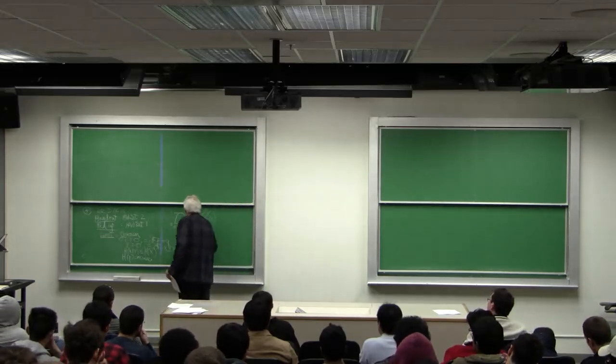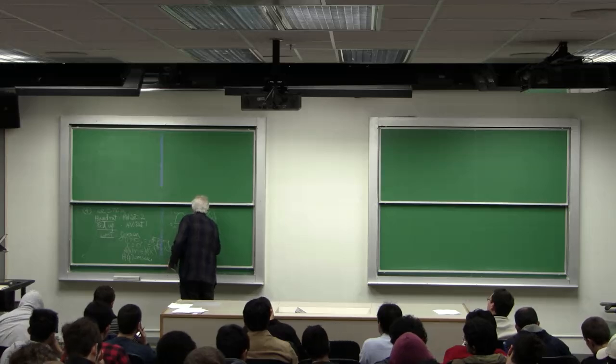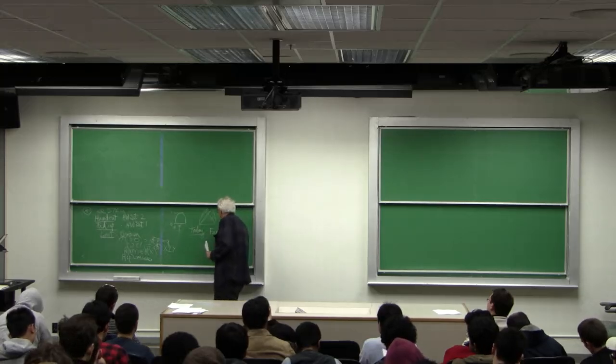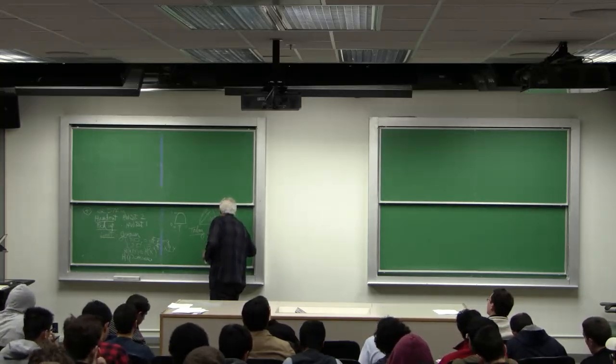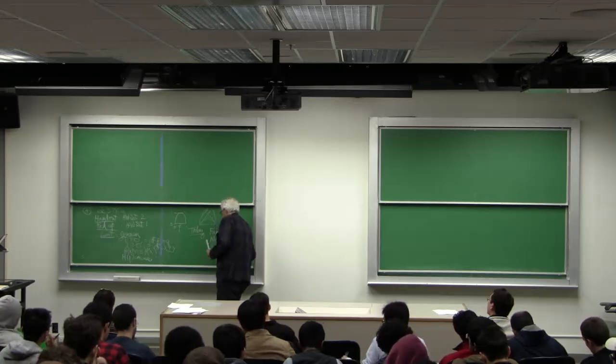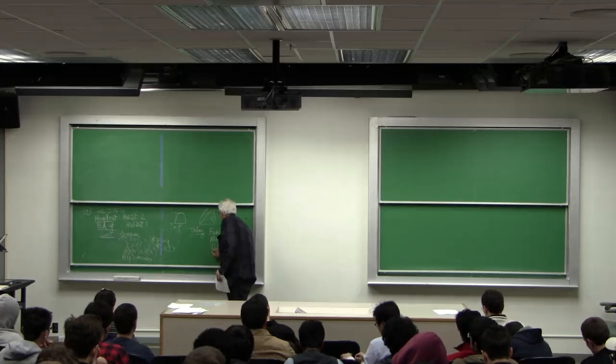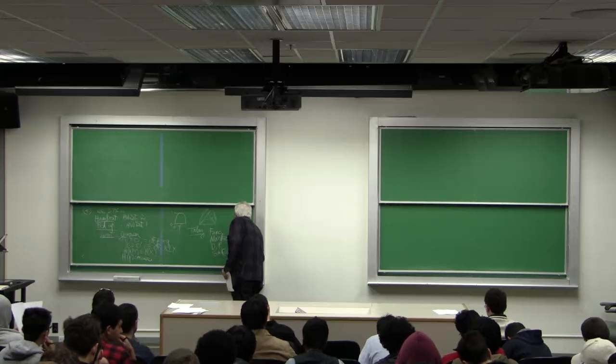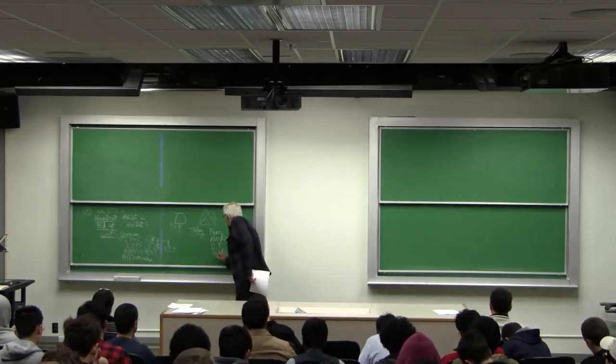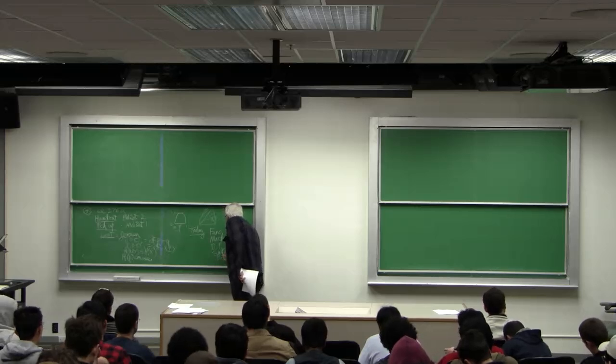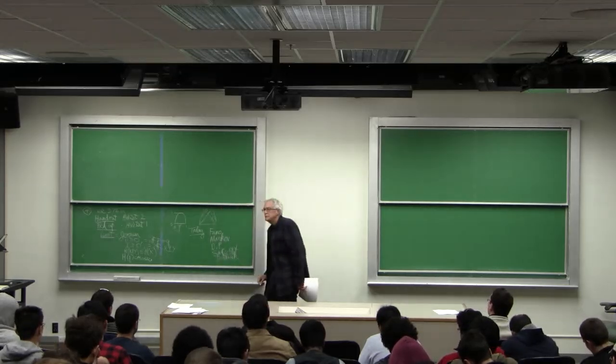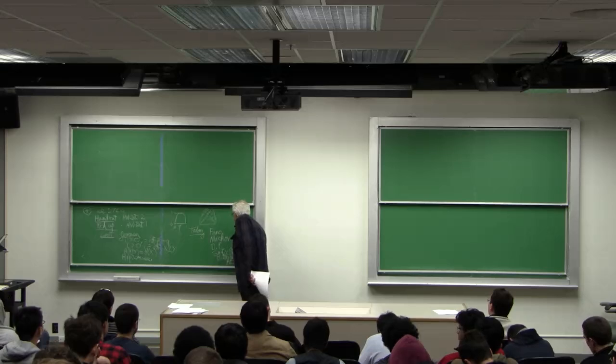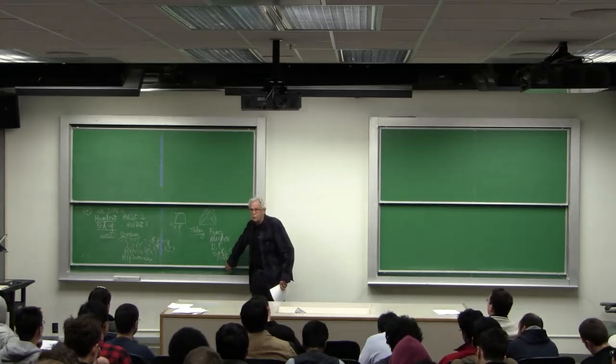Today I want to look at Fano's inequality, the definition of Markovity, the data processing inequality, and the notion of sufficient statistics and bottlenecks. And then next time but maybe we will start this time: AEP, the asymptotic equipartition property.